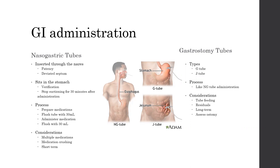A gastrostomy tube is a more long-term solution. There are two types: a G tube, which goes into the stomach, and a J tube, which goes into the intestines. The medication administration process is the same as with an NG tube. Additional considerations include checking residuals if the patient is receiving tube feedings — how much is sitting unabsorbed in the stomach or intestines — and stopping tube feedings to administer medications, though feedings can resume right away afterward. Always assess the insertion site for signs of infection and make sure the tubing is not dislodged.